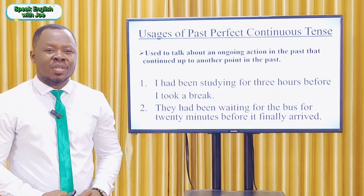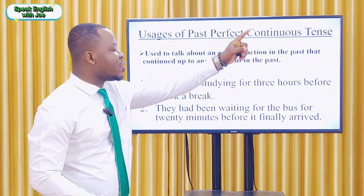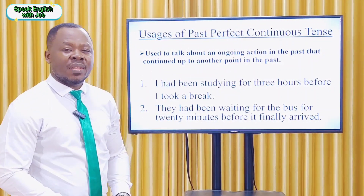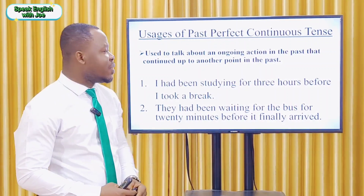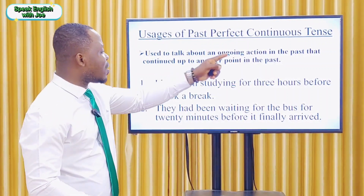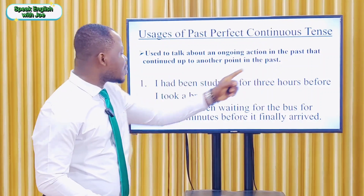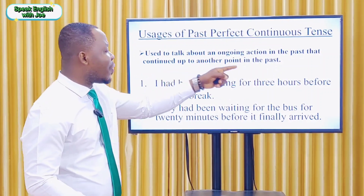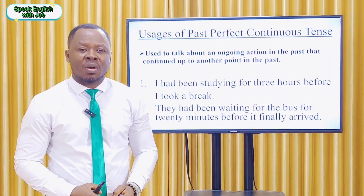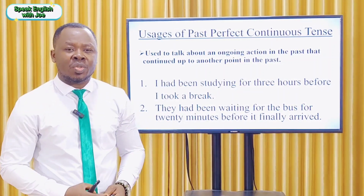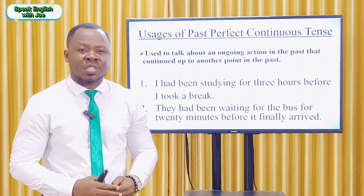Now let's look at the usages of the past perfect continuous tense. The past perfect continuous tense can be used to talk about an ongoing action in the past that continued up to another point in the past. We use 'for' or a duration to talk about how long the action was in progress.